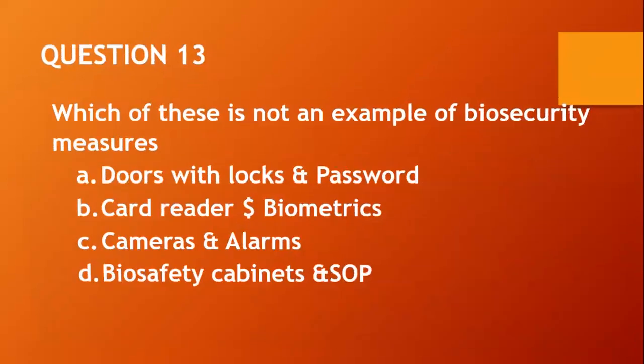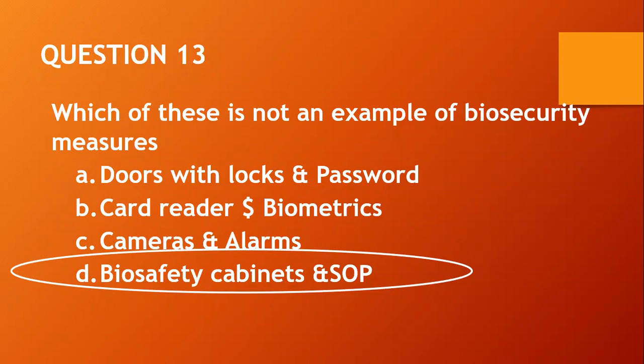Question thirteen: Which of these is NOT an example of biosecurity measures? A, doors with locks and passwords; B, card readers and biometrics; C, cameras and alarms; D, biosafety cabinets and SOP. Remember, biosecurity measures are put in place to avoid unauthorized access to biological materials in the lab. The only option that looks different is biosafety cabinets and SOP — so the answer is D.